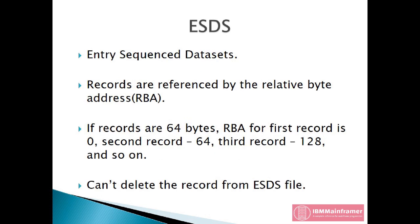Entry Sequence Datasets. In an ESDS, each new entry goes in right after the last one, and records are referenced by the relative byte address. So if we know the records are 64 bytes each and we want to reference the first record, the RBA is 0, and for the second it's 64, and for the third it's 128, and so on. Because the records go in one right after the other, you can't delete a record once it's in there — you can only mark it as inactive. This structure generally lends itself to high performance when data is loaded and read sequentially.